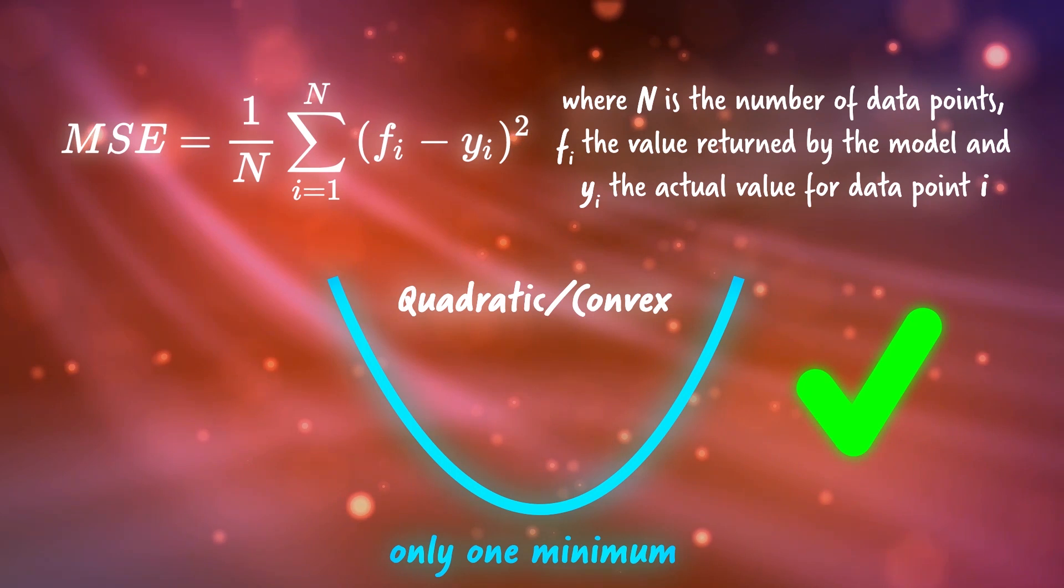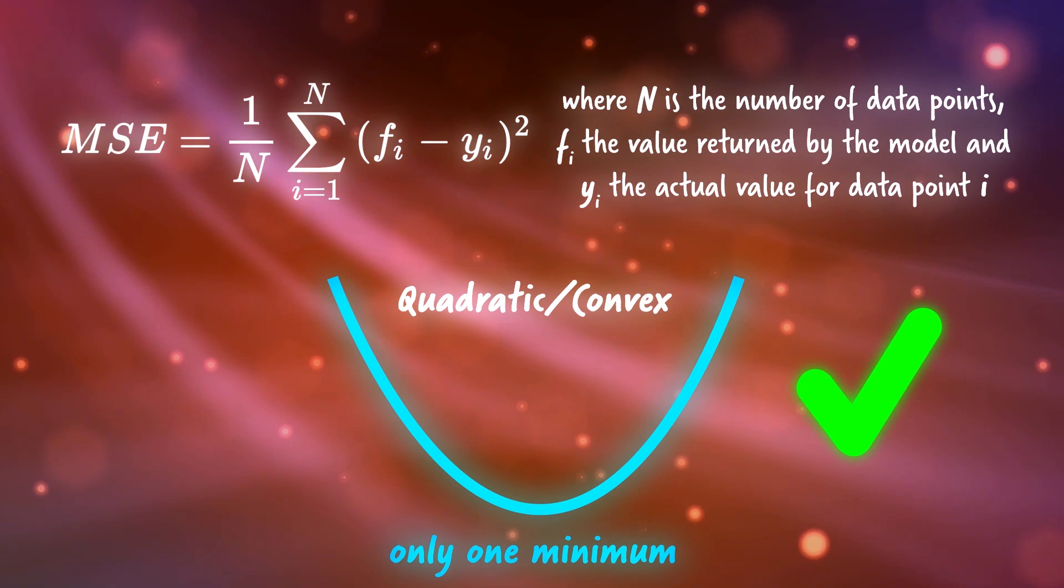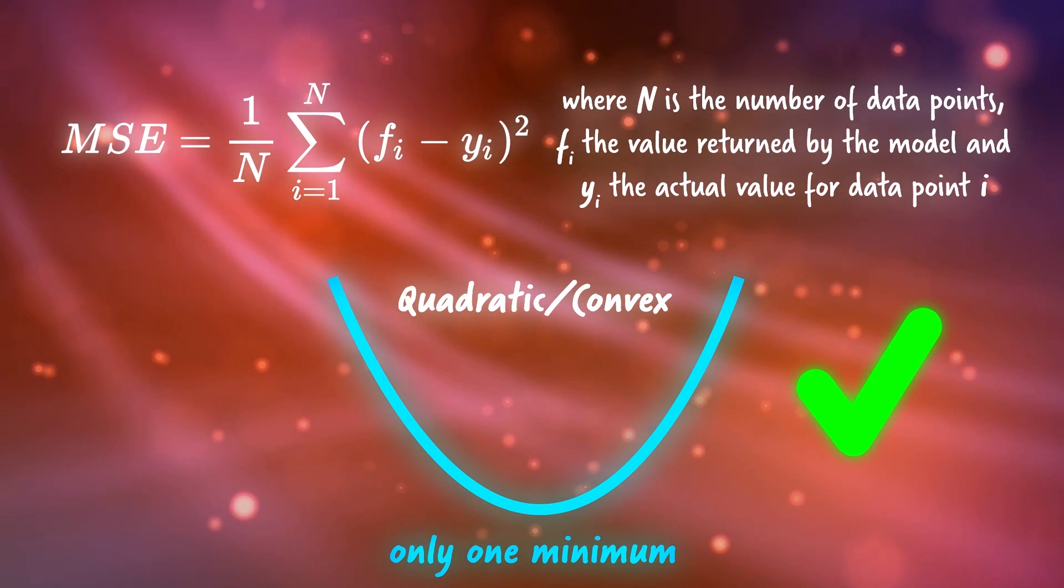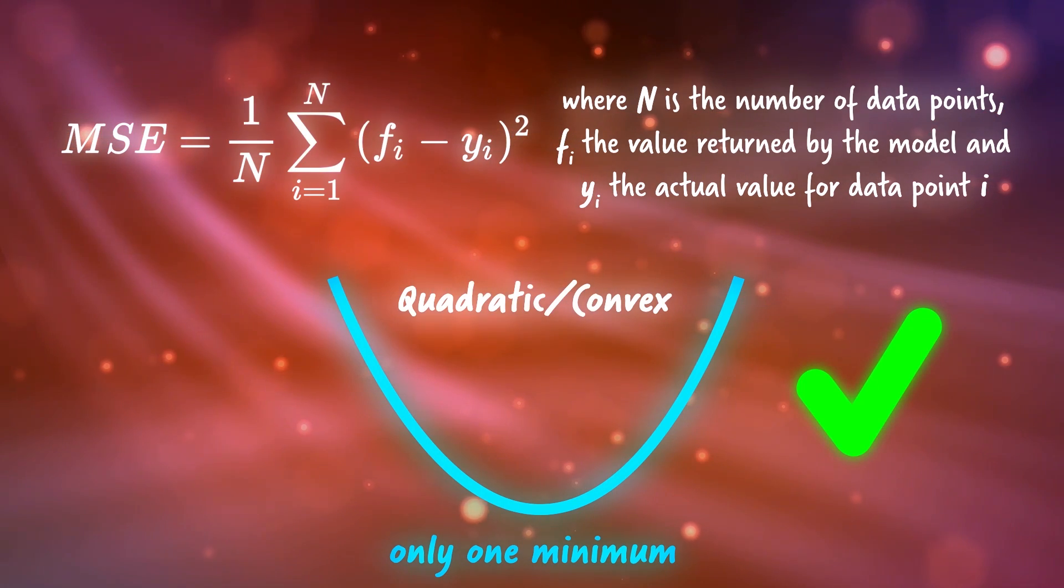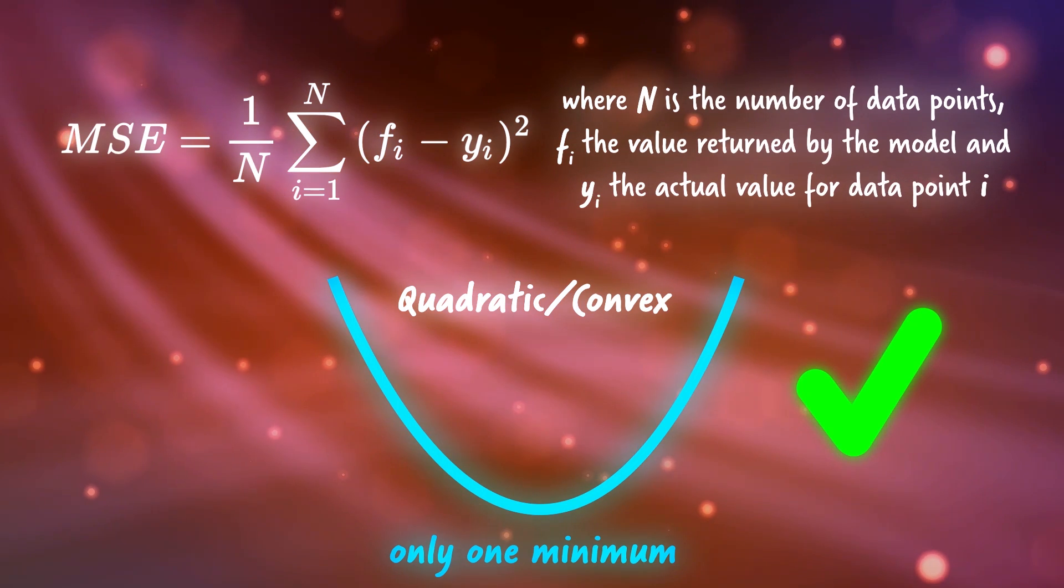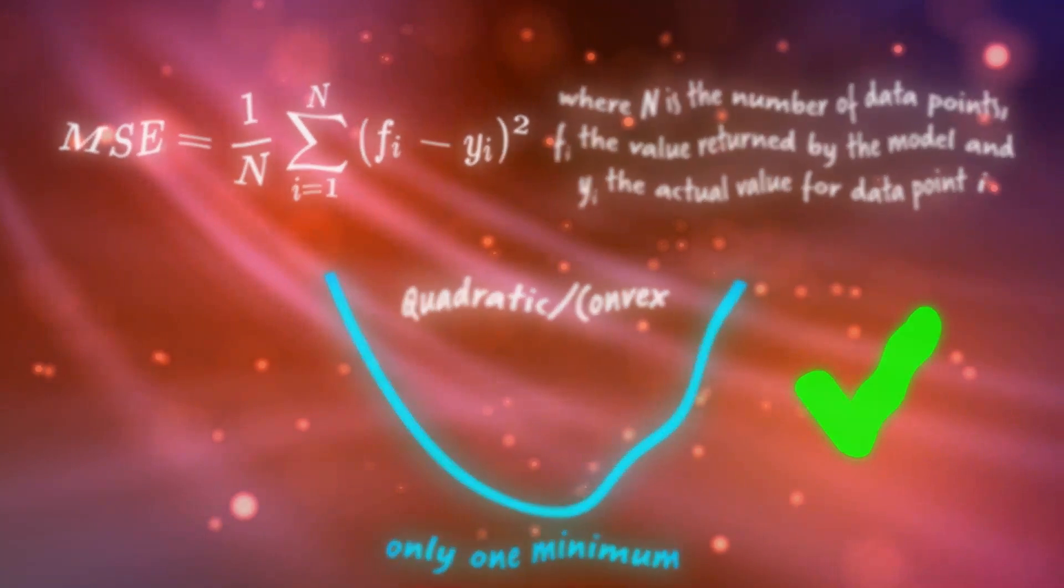The reason the square is in there is because it lets our result be quadratic or convex. When we plot a quadratic function, it'll have a U shape with only one minimum. So when we use an optimization strategy, like say gradient descent, we won't get stuck in a local minimum. We'll find the global minimum, which will ultimately help us find the ideal parameter values to optimize the objective function.